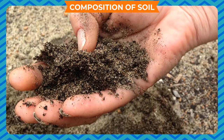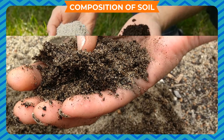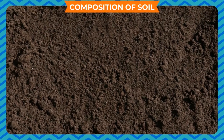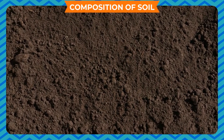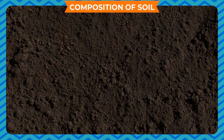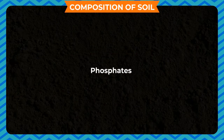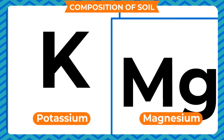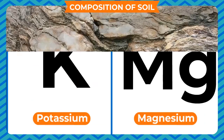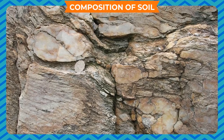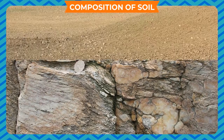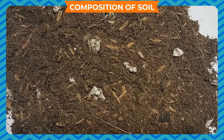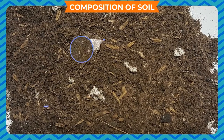Composition of soil: Soil contains both organic and inorganic matter. Inorganic matter includes various minerals, nitrates, sulfates, phosphates, and substances like iron, sodium, potassium, magnesium, etc. When these substances get mixed with the weathered parent rock, the result is what we call soil. The organic matter of the soil mainly consists of humus.